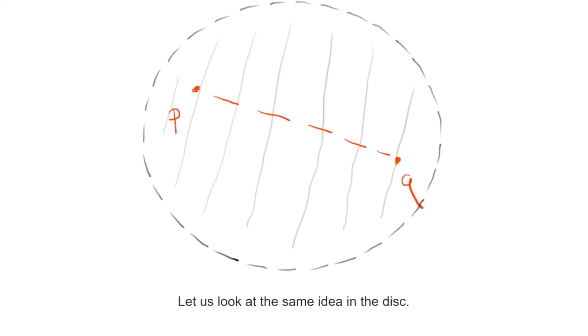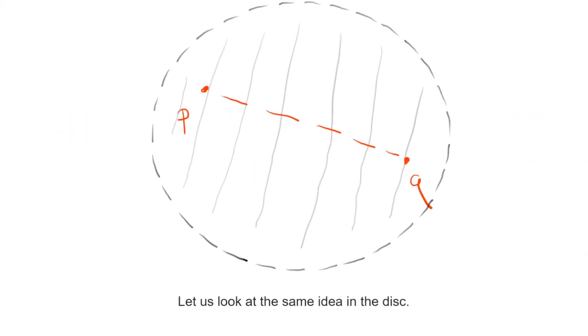Let's compare this to what happens in the disk. Given any two points p and q and some arbitrary path connecting them, depicted in blue, what we can do is apply a linear interpolation to take the path to the straight segment.